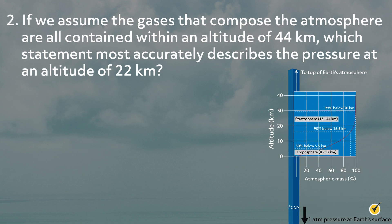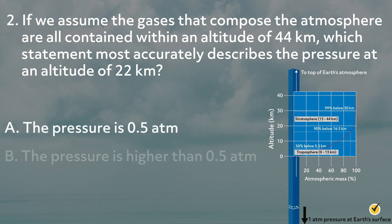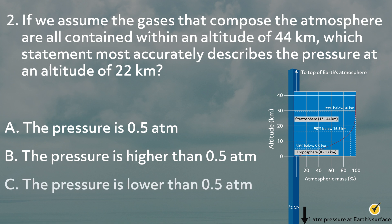Number two. If we assume that the gases that compose the atmosphere are all contained within an altitude of 44 kilometers, which statement most accurately describes the pressure at an altitude of 22 kilometers? A. The pressure is 0.5 atmospheres. B. The pressure is higher than 0.5 atmospheres. Or C. The pressure is lower than 0.5 atmospheres.